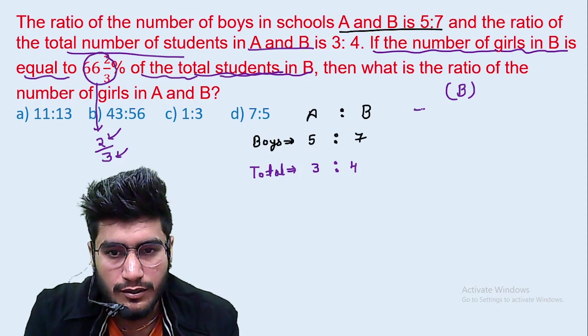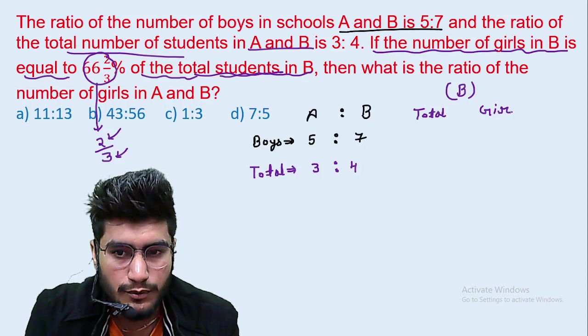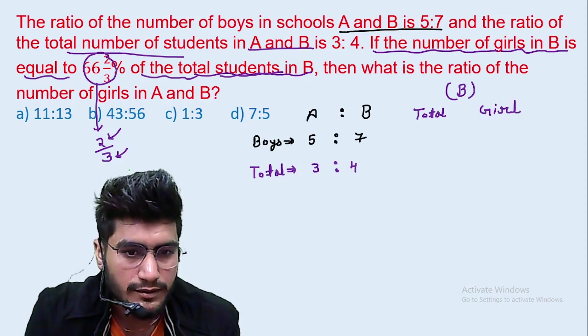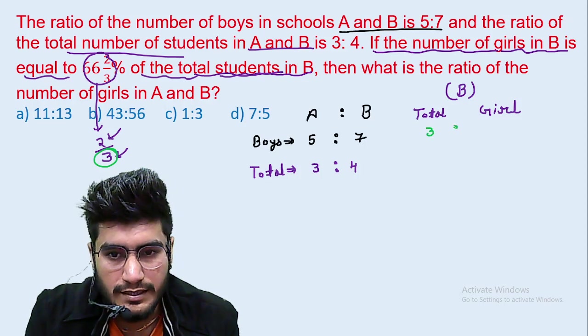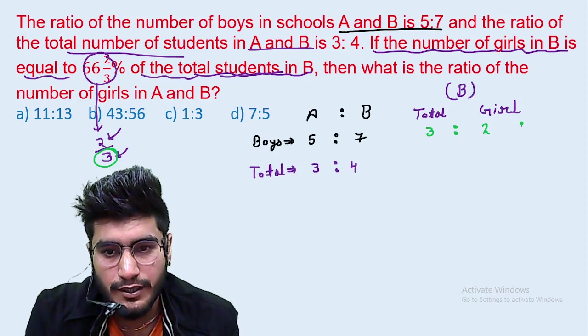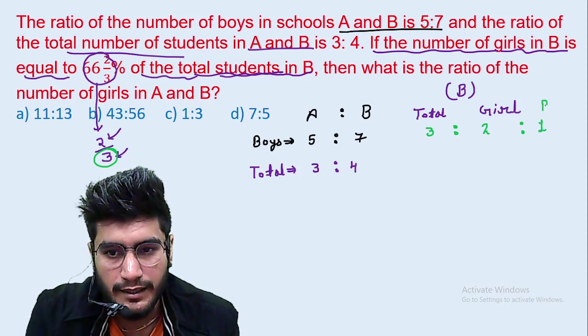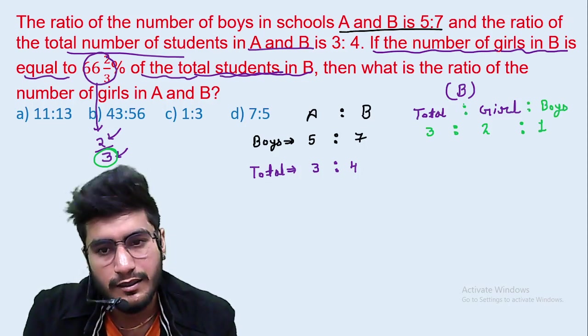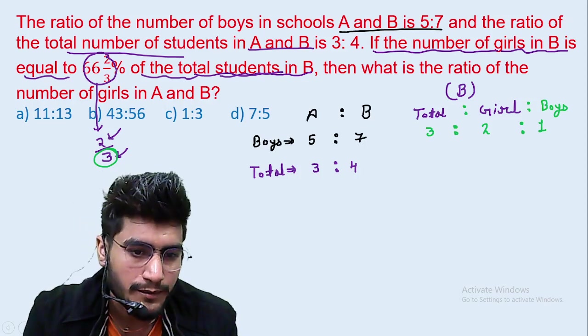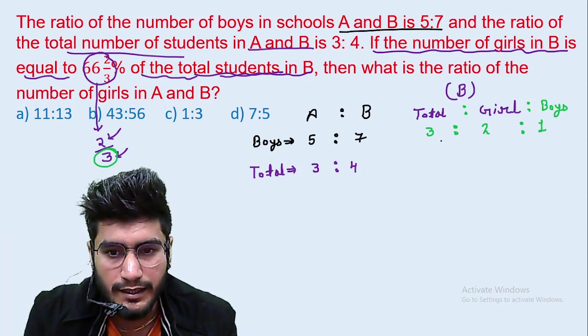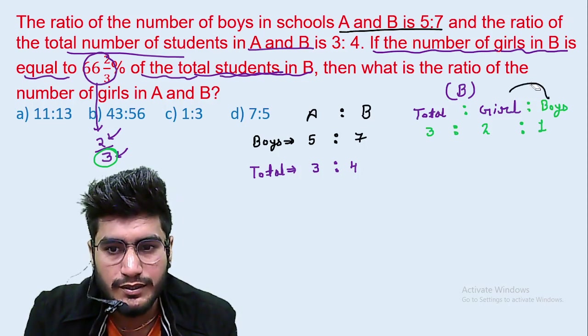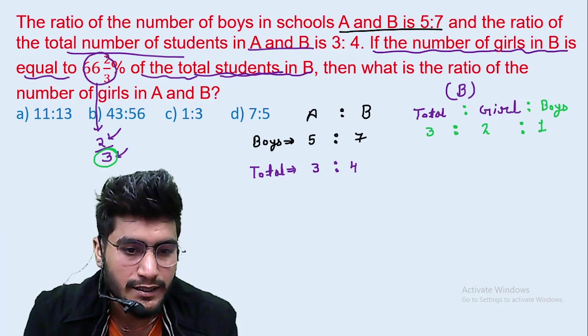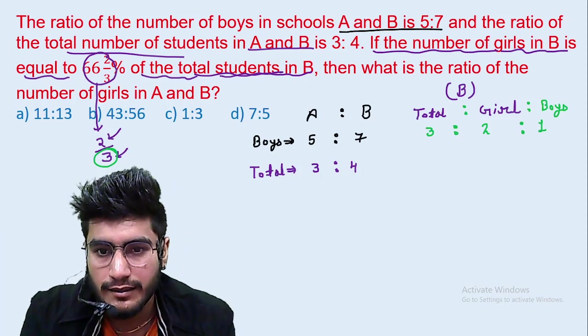So, what is B? What is the total of girls ratio? Total and girls ratio. Okay, now we have three ratios, three are different, no relation. First we have to make relation.